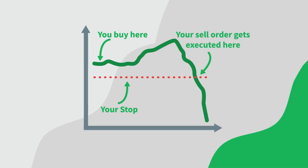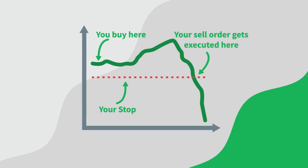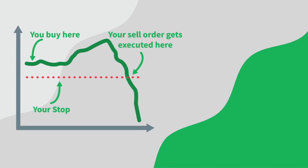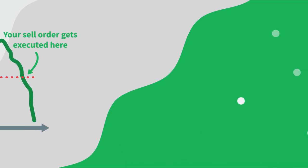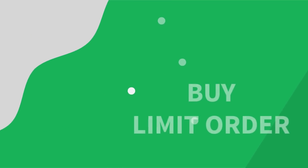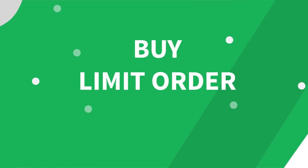You can use the same principle for other use cases as well. For example, if you want to buy a stock but it is too expensive at the moment, you can simply create a buy limit order. We'll buy the stock as soon as the price drops below your specified value.